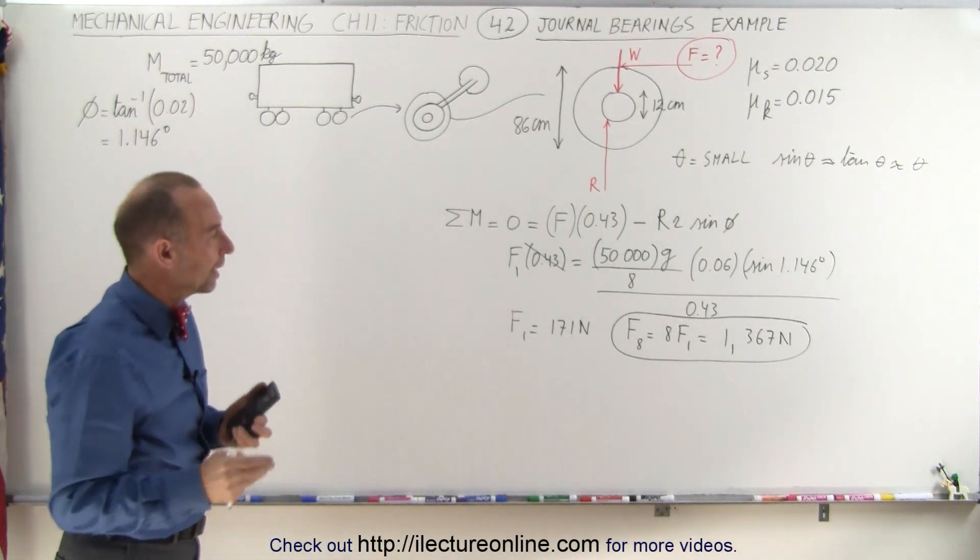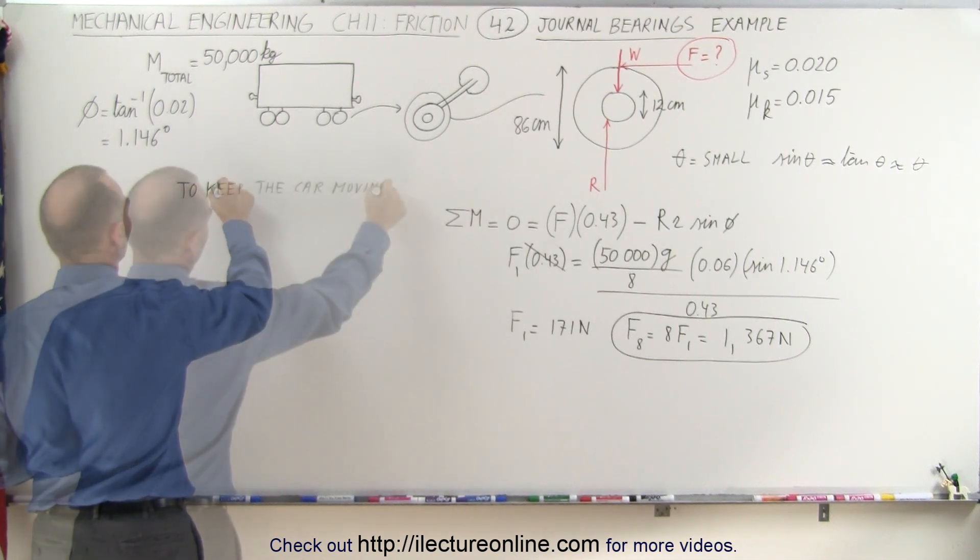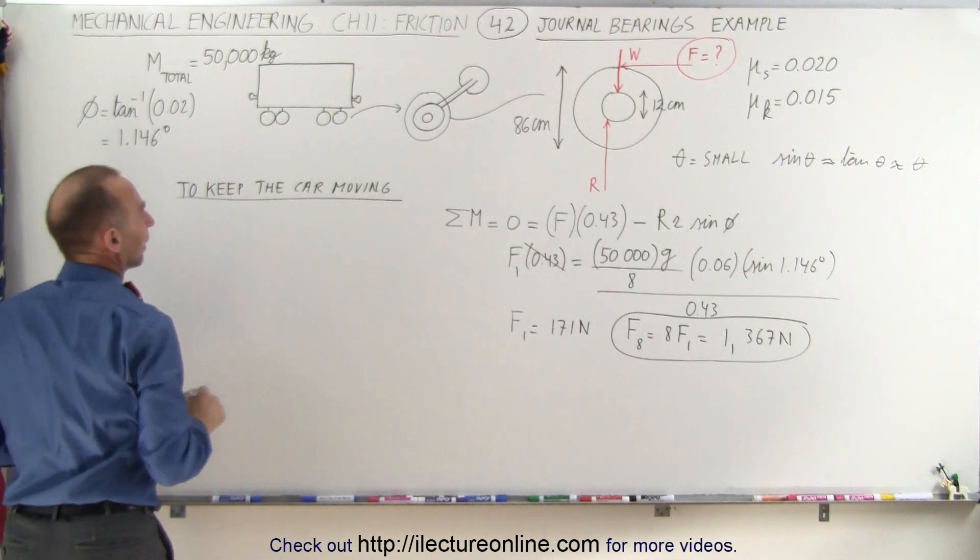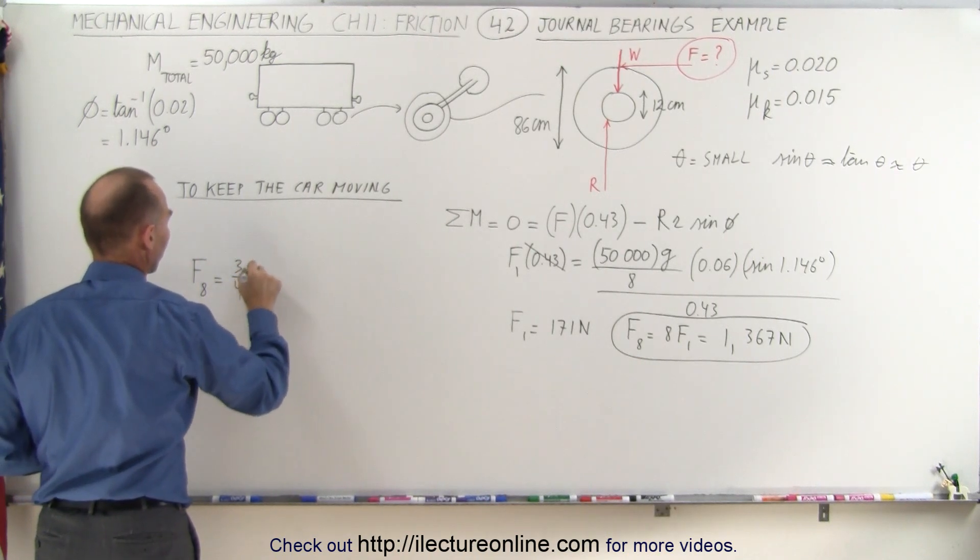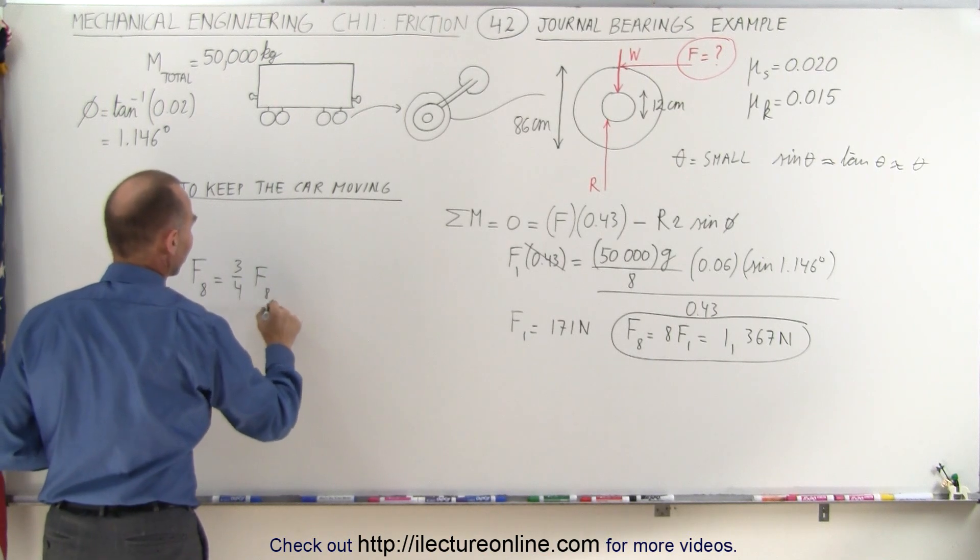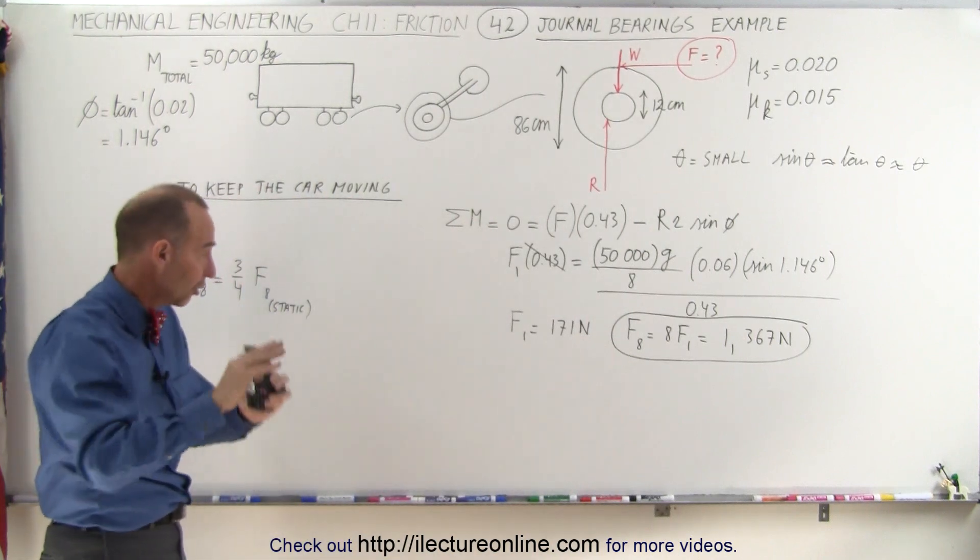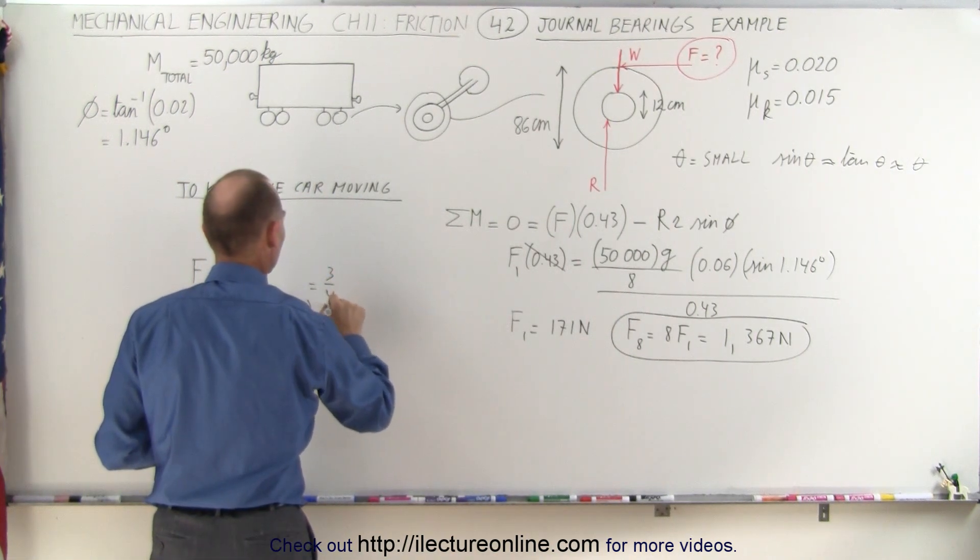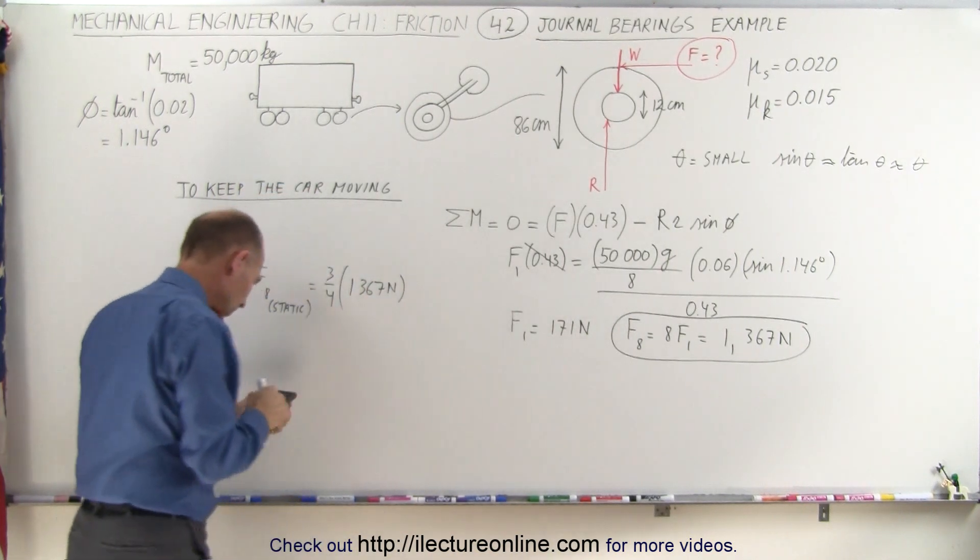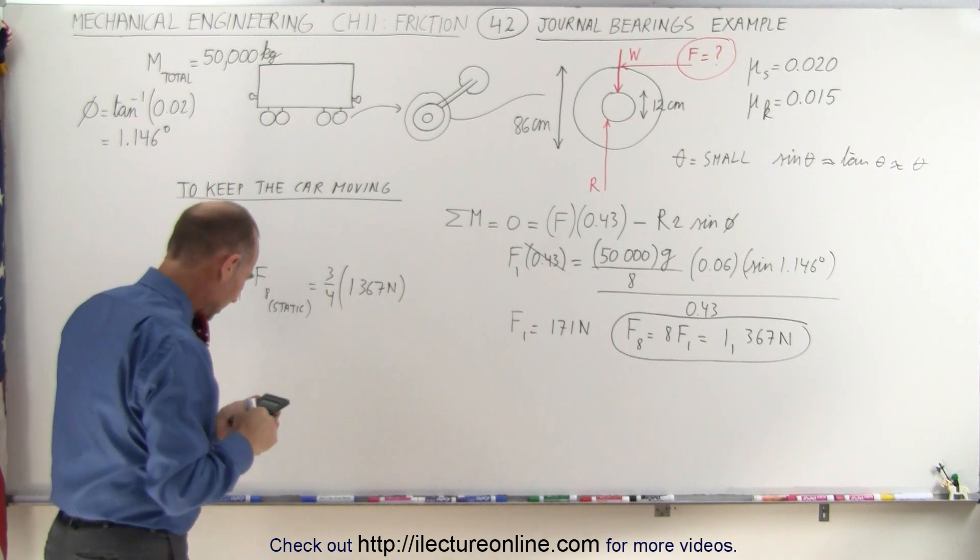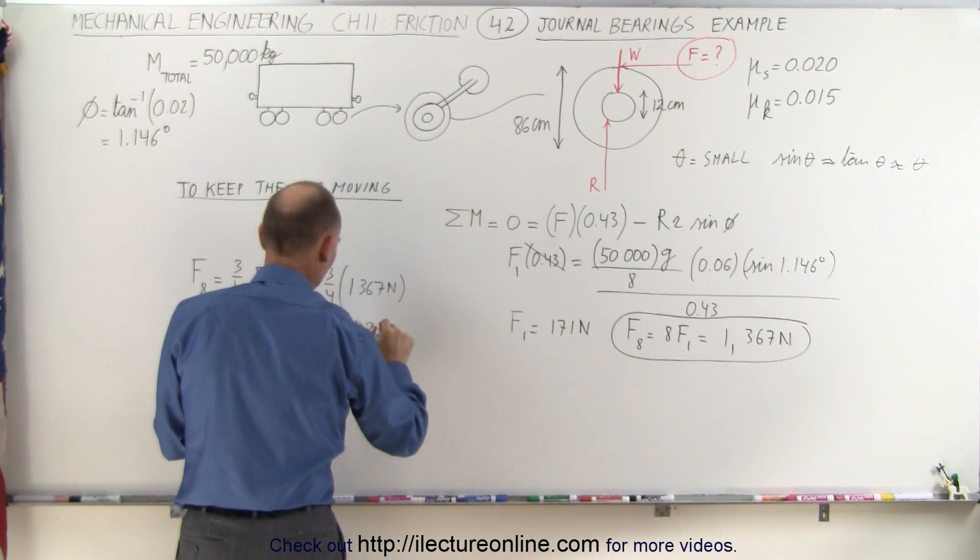Alright, so I'll go ahead and do that and then I'll show you why that works. So again, to keep it rolling, we can say that the force for all eight wheels is equal to three quarters the force for all eight wheels if it's static. And that's what we have over here, this is for the static situation trying to get the cars moving. So this is equal to three quarters the 1,367 newtons. So we can say that times 0.75 and that would then be equal to 1,026 newtons.